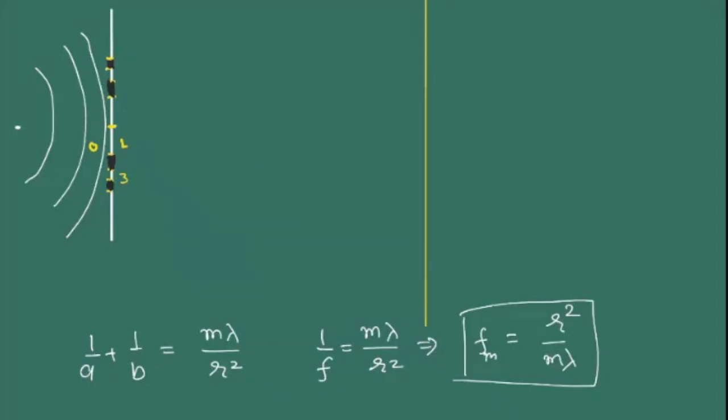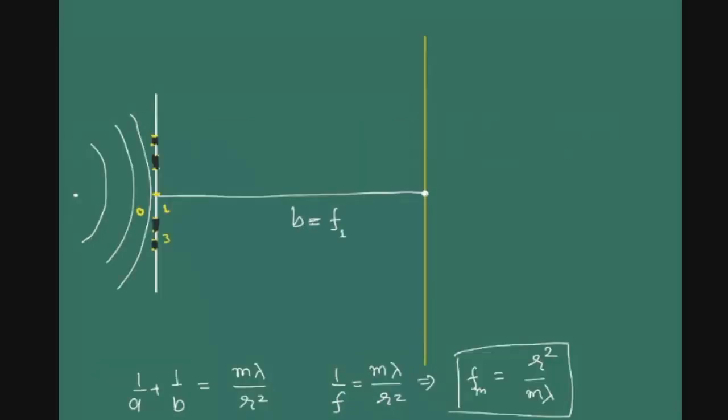As m is changing, our distance of focusing will also change. If I'm talking about m=1, then if my first zone is there at this particular b, we're getting the sharp point. Earlier when I was changing b, n was changing. But now we don't have that provision. Now our radius is fixed, which is a physical limitation given by the zone plate. If I have a condition where r1 because of actual wavefront is matching with r1 of my zone plate, then my b will also be fixed for a particular lambda.